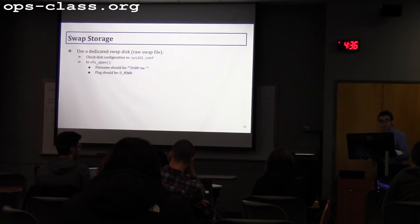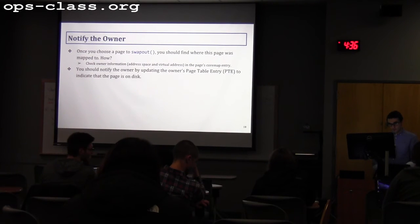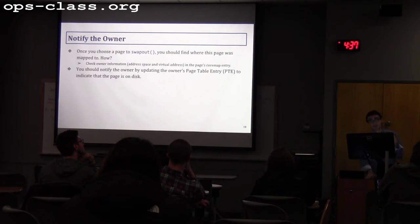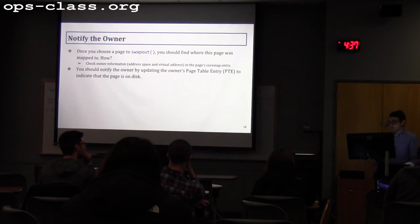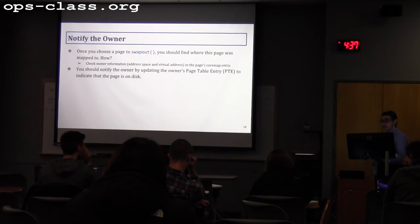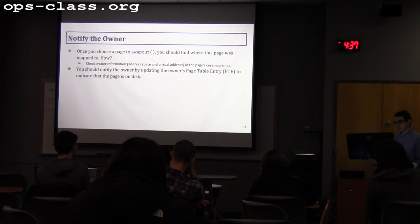The second question is how to notify the owner. When you choose a page to swap out, you need to find where it was mapped. This is why the core map entry has an owner information field — a pointer to the address space and the virtual address. Once you identify the owner, update its page table to indicate the page is now on disk and not in memory.